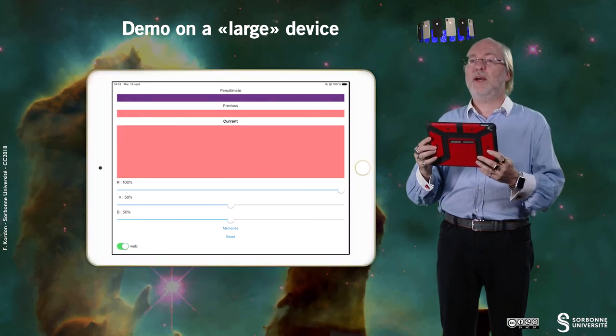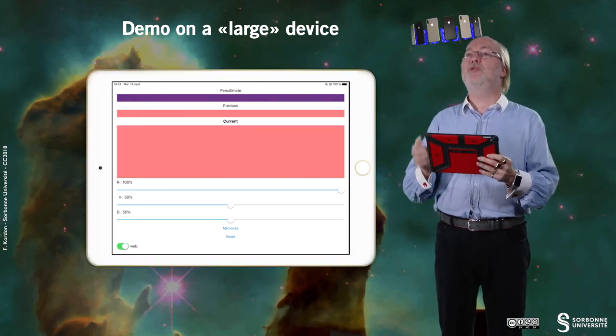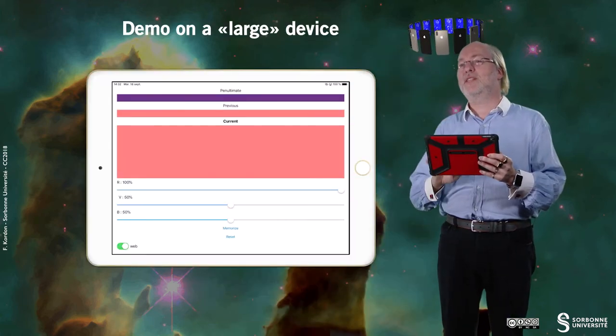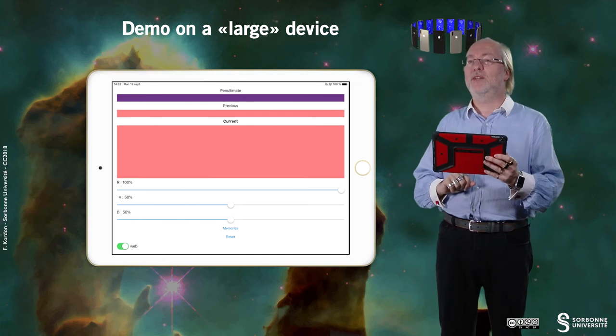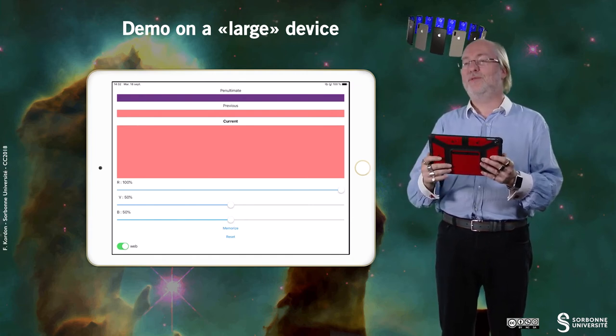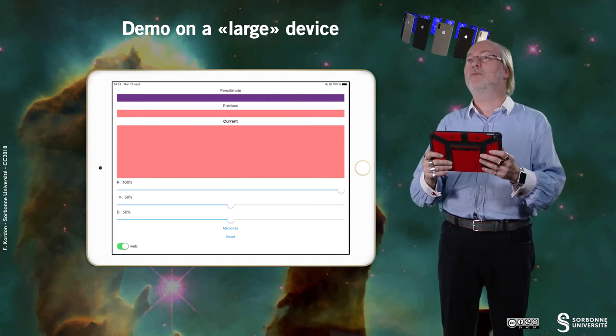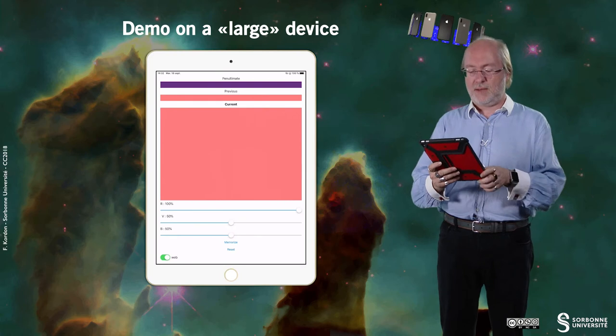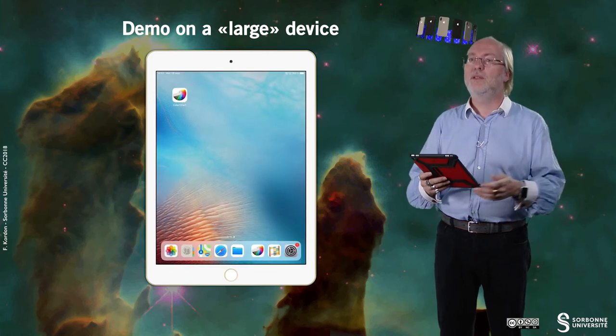And if I change orientation, then there is no need to have on one side of the device the colors and on the other side of the device the sliders, because everything fits even in the height of the device when it's in landscape mode. So this is the way this app behaves in a large terminal.